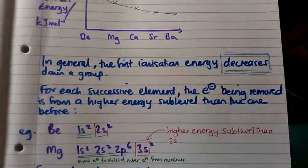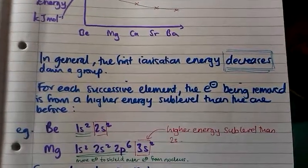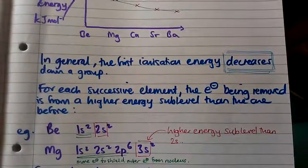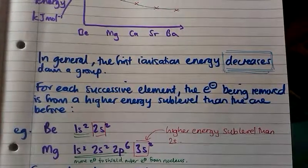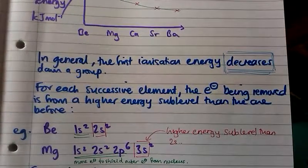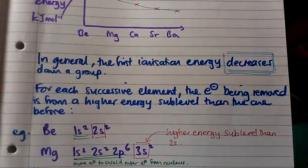Looking at which sublevels the outer electrons are in — in beryllium the outer electron is in the 2s sublevel, whereas in magnesium it's in the 3s sublevel. The 3s sublevel is higher energy than the 2s sublevel.